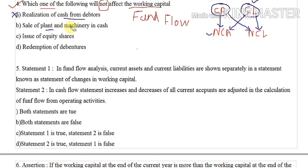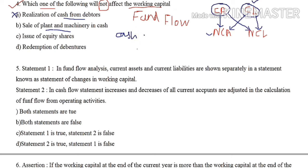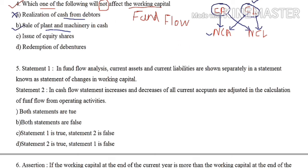The second option is 'sale of plant and machinery for cash.' Cash is a current item, and plant and machinery is a non-current asset. Since one current and one non-current item are involved, working capital is affected.